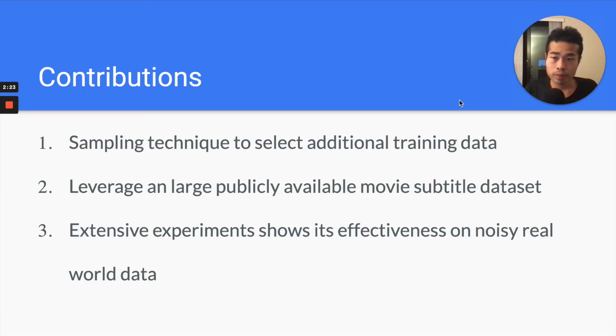So the contributions of the paper: first one, we introduce a sampling technique to select additional training data that is similar to your in-domain data, so you can have more data for your task and leverage some large public available datasets. They contain punctuations, because our task in this paper is punctuation restoration. In the movie subtitles, it's very well punctuated. And also we do extensive experiments and show this method is quite effective on real world data.